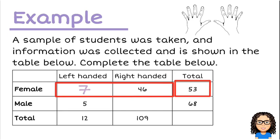Then, the next one, I know that I've got 5 males who are left-handed. I don't know how many right-handed males I've got, but it must add up to 68. So 5 plus something equals 68, and in this case it's going to be 63.